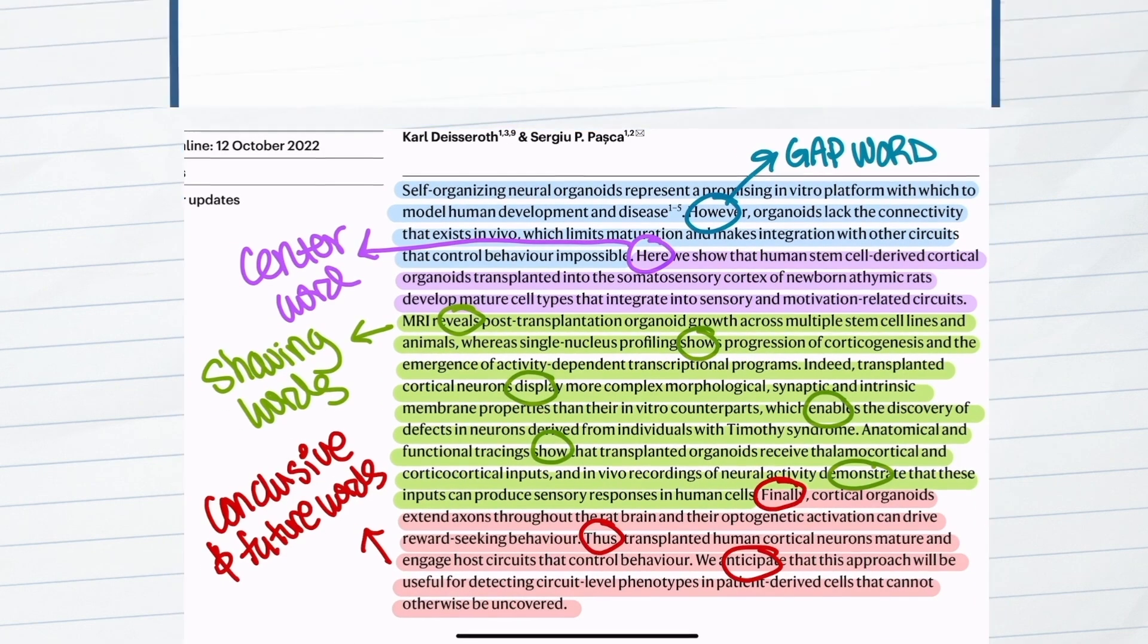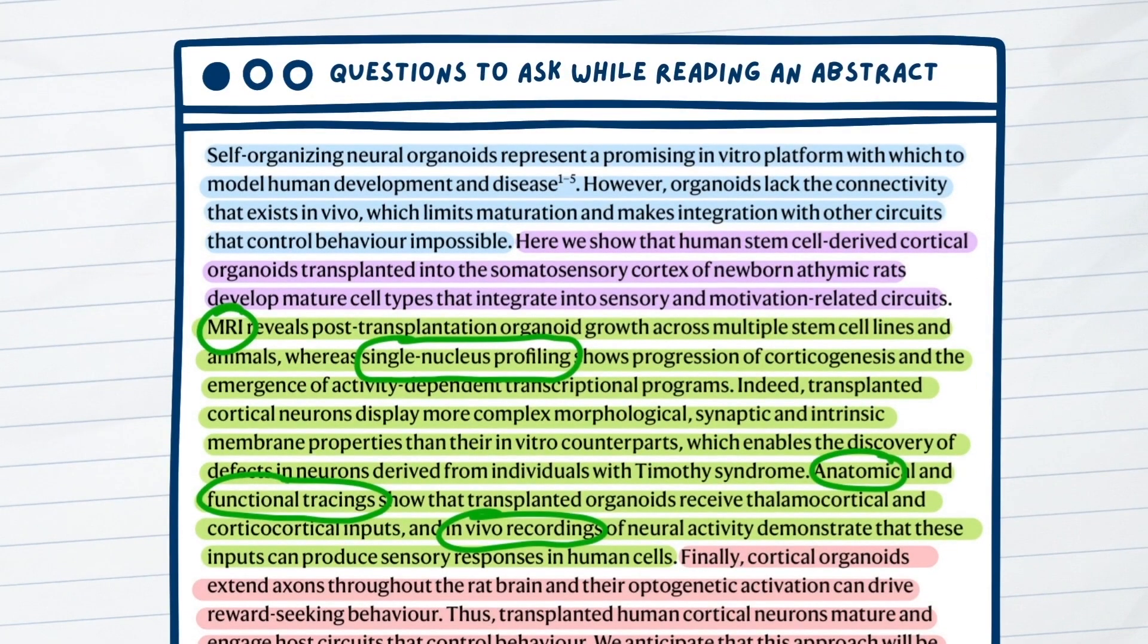For example, we know that the researchers use experimental techniques like MRI scanning, single nucleus profiling, anatomical and functional tracings, and in vivo recordings of neural activity to support their conclusions in this abstract, but we may not know what all of these procedures actually entail. So, we can go straight to the methodology section located at the end of this paper to learn more about such techniques.